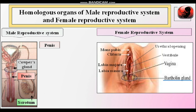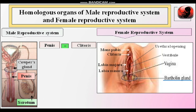The penis is a part of the male reproductive system which acts as a copulatory organ. The clitoris is a sensitive part of the female reproductive system. These two organs are homologous to each other — they are made up of the same type of tissue, erectile tissue, known as corpora cavernosa.